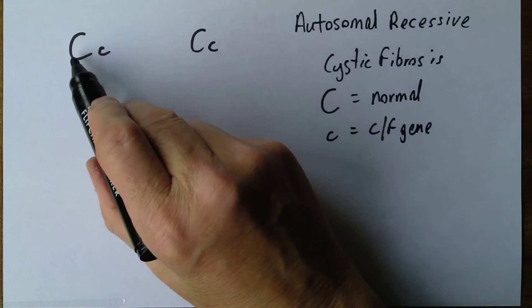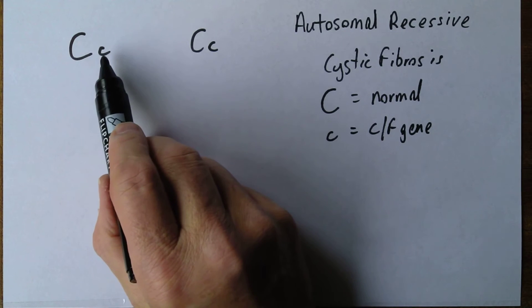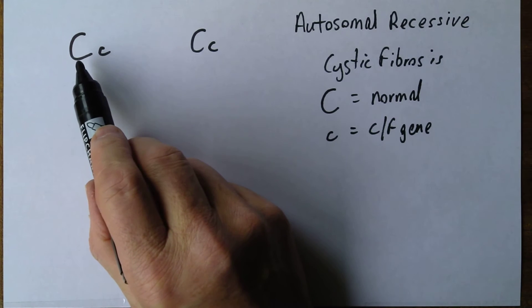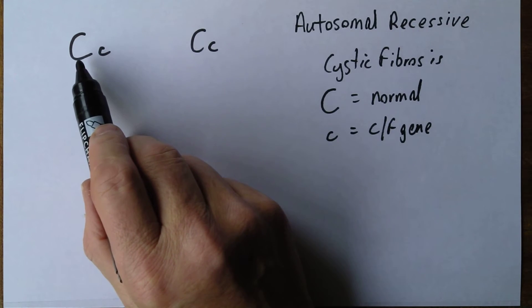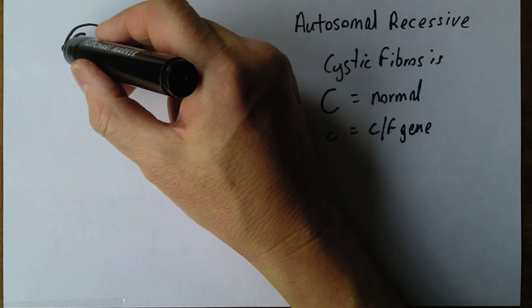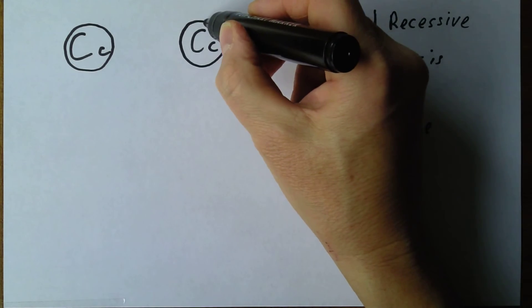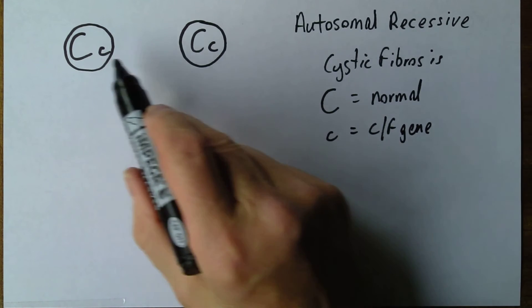Now what this means is because the cystic fibrosis gene is recessive and the normal gene is dominant, because they have a copy of the normal gene both of these parents are going to be phenotypically normal. They may not even know that they're carrying the cystic fibrosis gene.